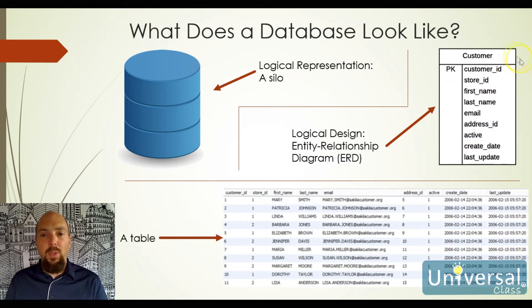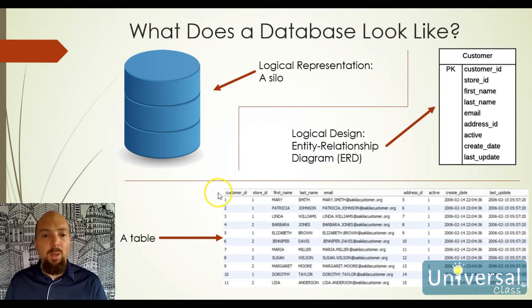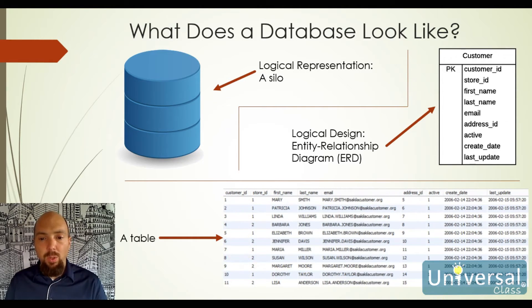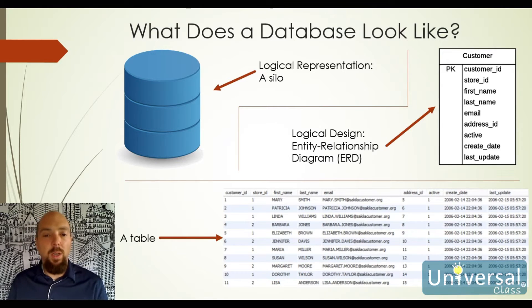These are the column names. This ERD represents the table shown here — this is what it actually looks like when I pull up information out of the database. So when I look at information in the database, I will see things like a customer ID column, a store ID column, first name, last name, email address, and so forth. To me it looks like a table, but behind the scenes the database system may store it in some manner that doesn't even look like this. This is what us humans see when we look at a database — we see tables.